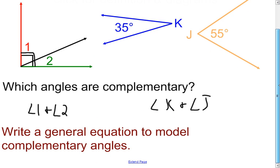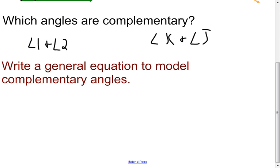To help you later, you'll need to write equations dealing with complementary angles. The sum of the two angles has to be 90 degrees — sum means add, and 'is' means equals, so the equation is x + y = 90. You can use any variables you want, but that's the general equation to model complementary angles.